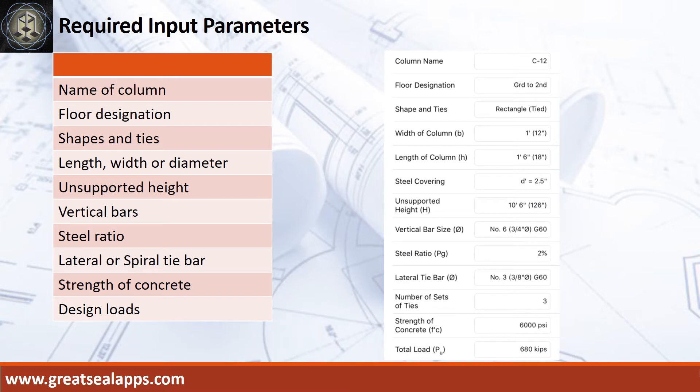Enumerate input parameters required: Name of column, C12. Floor designation, ground to second. Rectangular shape, tied column. Unsupported height, 10 feet 6 inches.